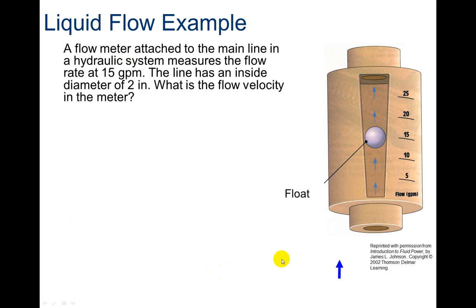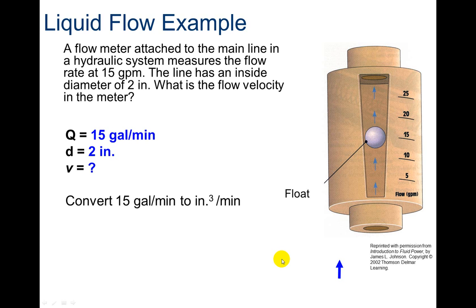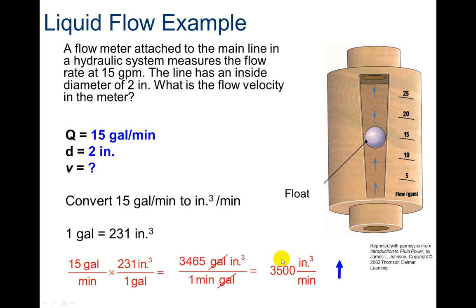A flow meter attached to the main line in a hydraulic system measures the flow rate of 15 gallons per minute. The line has an inside diameter of 2 inches. What is the flow velocity? I know my flow rate and my diameter of 2 inches, and I'm looking for velocity. So I need to convert 15 gallons per minute to inches cubed per minute. The conversion factor is 1 gallon equals 231 inches cubed, so I convert that and find it is 3,500 inches cubed per minute.